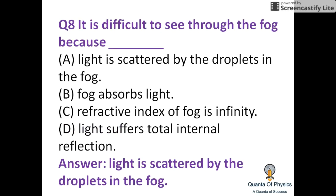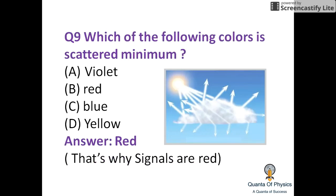It is difficult to see through fog because light is scattered by the droplets in the fog. Among the colors, red is scattered the minimum — that is why signals are red.